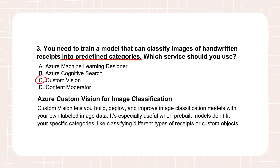Custom Vision is actually quite straightforward. You upload your images — your receipt photos — and label them. So you tell it: these are restaurant receipts, these are hotel receipts. You tag them through a simple web interface. Then Custom Vision takes those labeled examples and, behind the scenes, trains a custom AI model specifically to recognize your categories in new images it hasn't seen before. It handles the complex ML stuff for you. Train it on examples, and it learns.